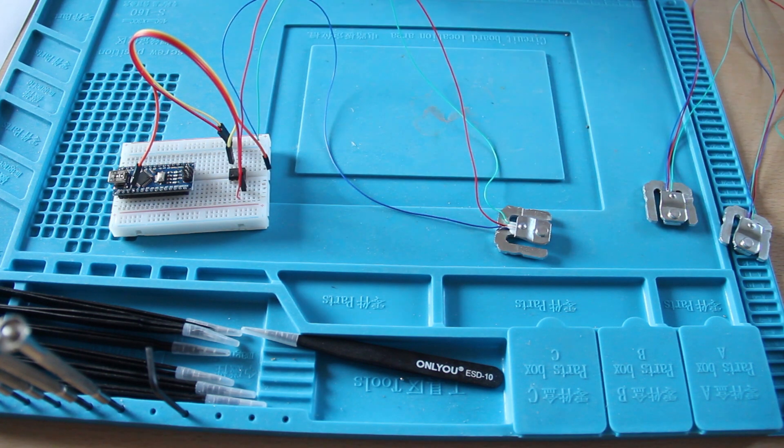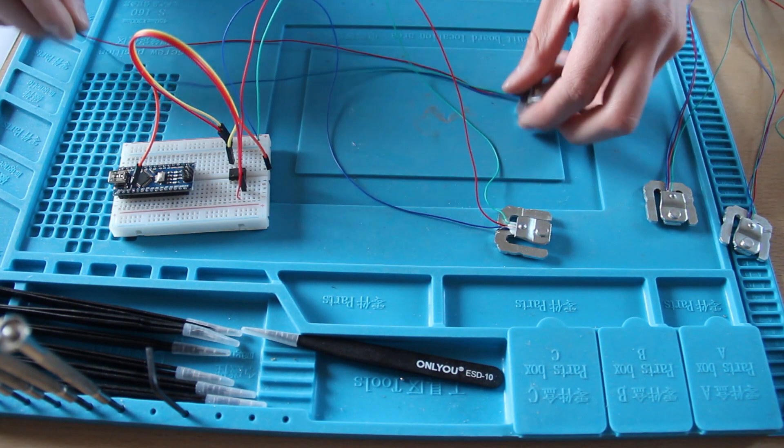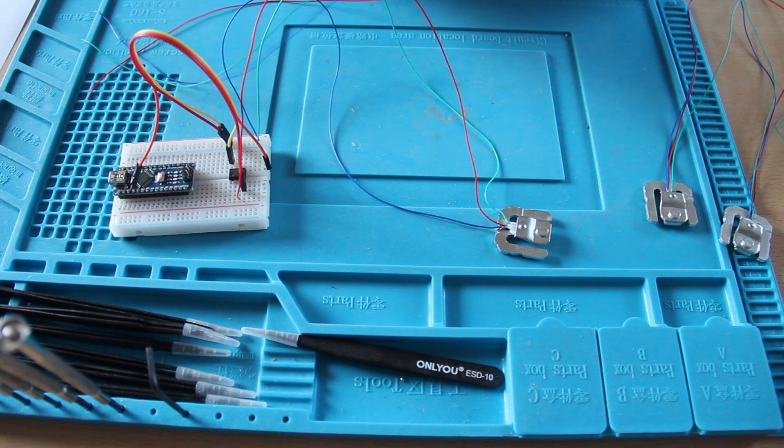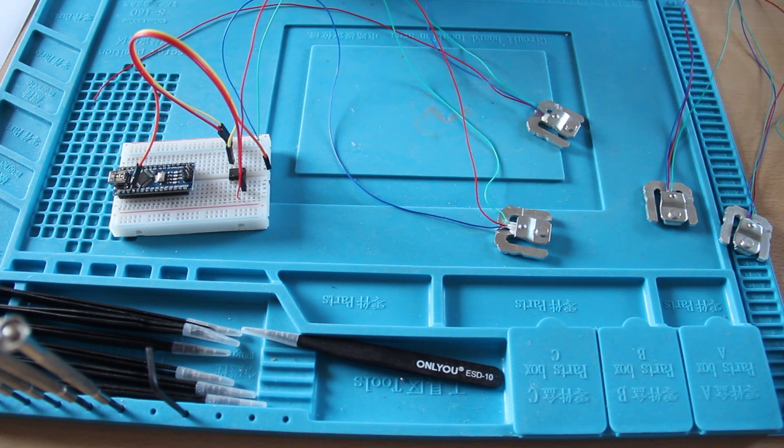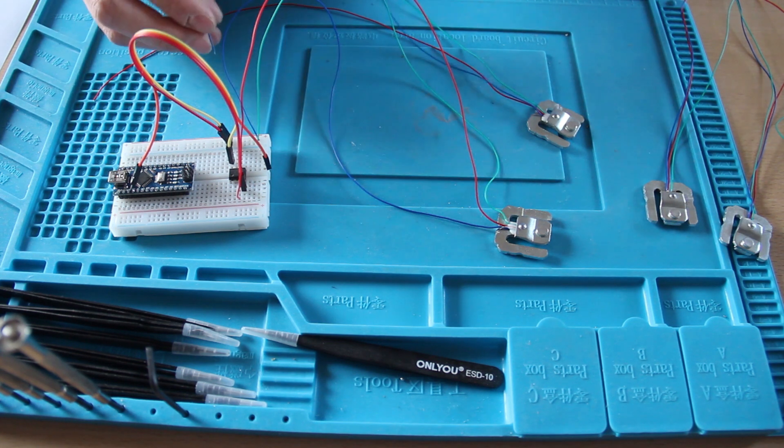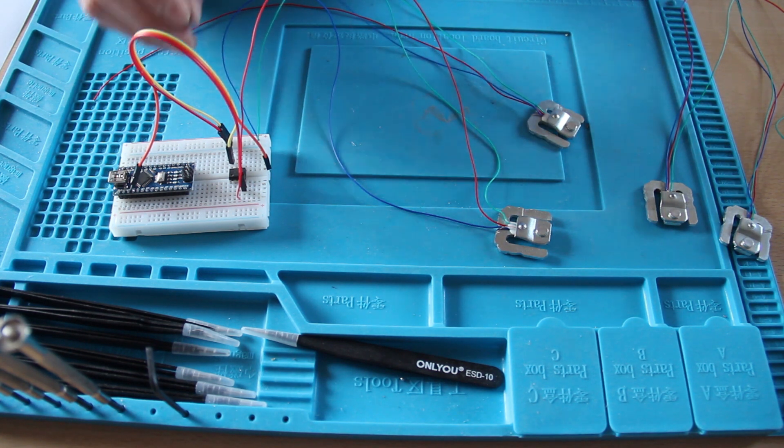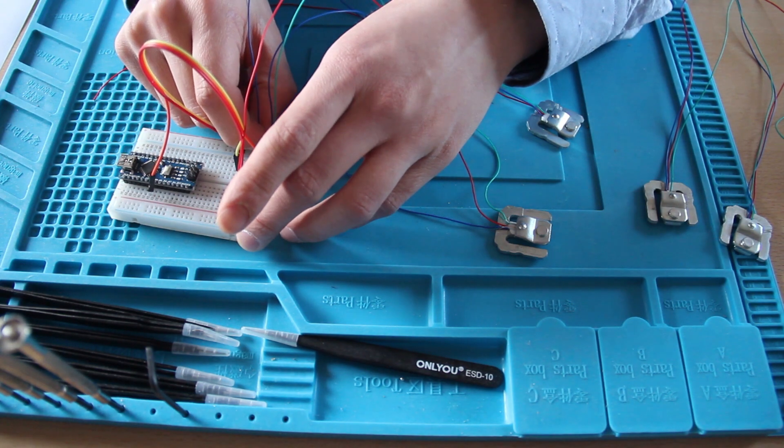Now load cell number two. That's this one. The blue wire once again has to go to the VCC or the five volts line.